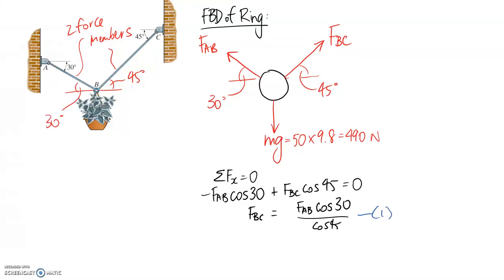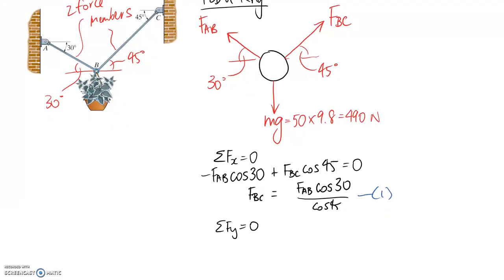So we now need to go ahead and get our second equation from looking in the y direction. So starting with FAB, it's going upwards so it's going to be positive and it's the sine side of the triangle that we need to take.